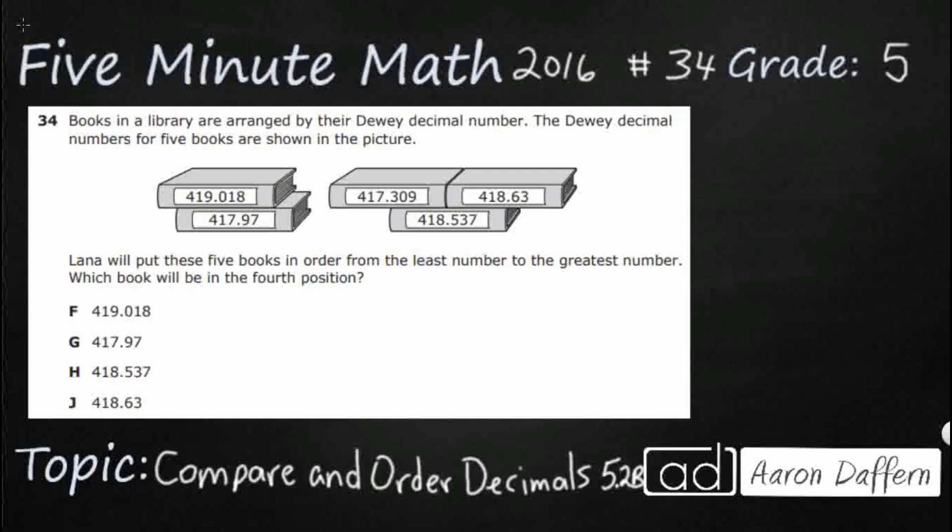So we are looking at books in the library that are arranged by the Dewey Decimal Number. We have these 5 here on the side of the books. We need to put these books in order from least to greatest, and then we are going to find the book that is in the 4th position.